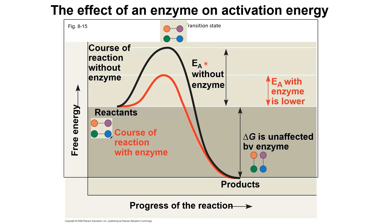The reaction without enzyme requires more activation energy, so the reactants must absorb more activation energy to reach the transition state. On the other hand, in the presence of enzyme, the reactants absorb only a small amount of activation energy, because the enzyme lowers the activation energy, and this speeds up the chemical reaction.